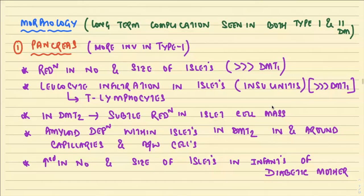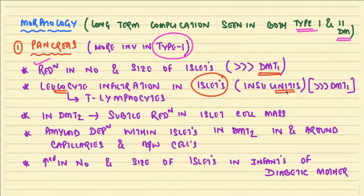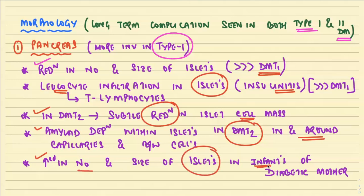Regarding morphology, long-term complications are seen in both type 1 and type 2 diabetes mellitus. In the pancreas, which is more involved in type 1, there is a reduction in the number and size of pancreatic islets. In type 1, because of autoimmune etiology, there is classical lymphocyte infiltration in the islets, called insulinitis. In type 2, there is subtle reduction in islet cell mass and amyloid deposition within the islets around capillaries and between cells. Infants born to diabetic mothers show an increase in number and size of islets due to excessive fetal insulin production stimulated by maternal glucose crossing the placenta.